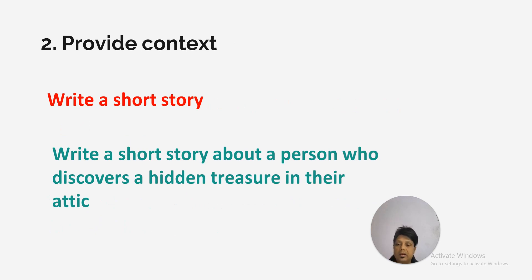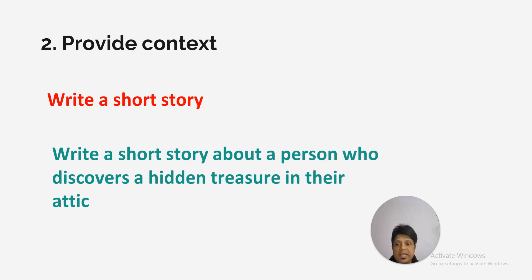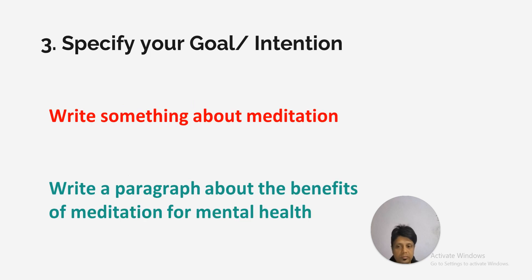The second method is to provide context. For example, if you just write 'write a short story', ChatGPT doesn't know the context. Instead, you can write 'write a short story about a person who discovers a hidden treasure in their attic.' The idea is that when you ask ChatGPT to do something, you need to provide context so it understands exactly what you need.